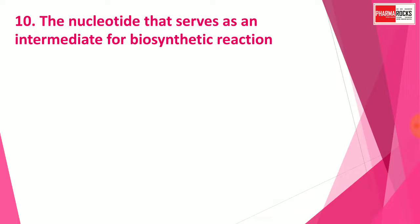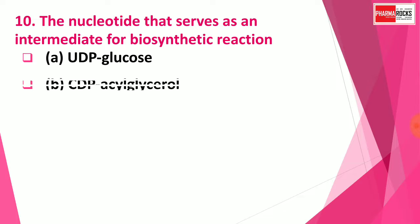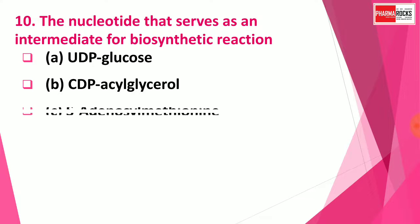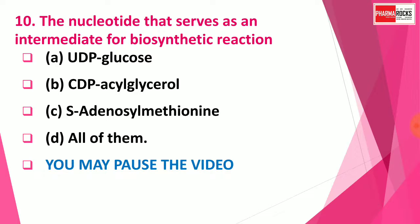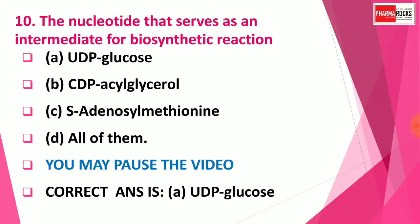Question number 10: The nucleotide that serves as an intermediate for biosynthetic reactions is — Option A: UDP-glucose, Option B: CDP-acylglycerol, Option C: S-adenosylmethionine, Option D: All of them. You may pause the video. The right answer for this question is Option A: UDP-glucose.